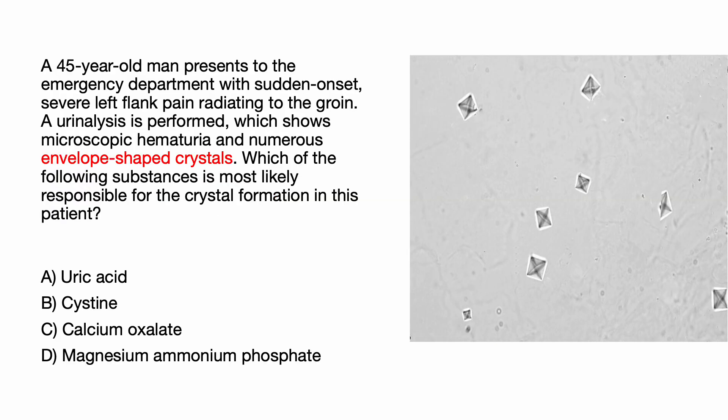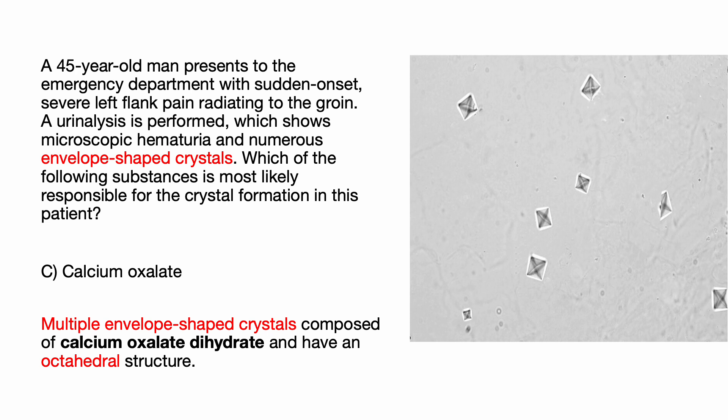A 45-year-old man presents to the emergency department with sudden onset of severe left flank pain radiating to the groin. A urinalysis is performed which shows microscopic hematuria and numerous envelope-shaped crystals. Which of the following substances is most likely responsible for the crystal formation: uric acid, cysteine, calcium oxalate, or magnesium ammonium phosphate? The correct answer is C, calcium oxalate, which are envelope-shaped crystals.